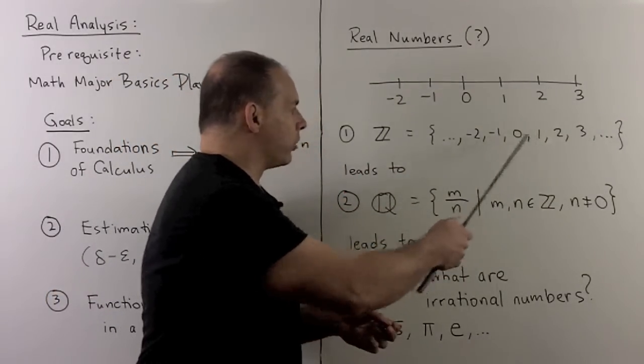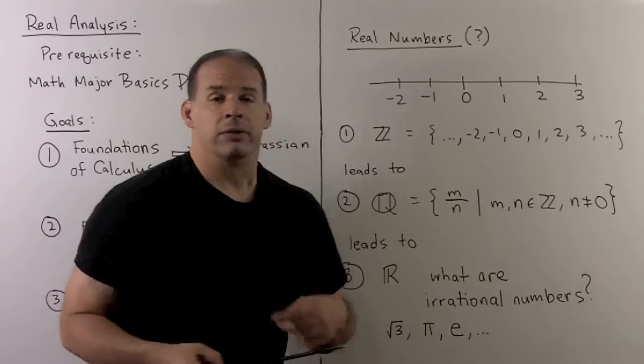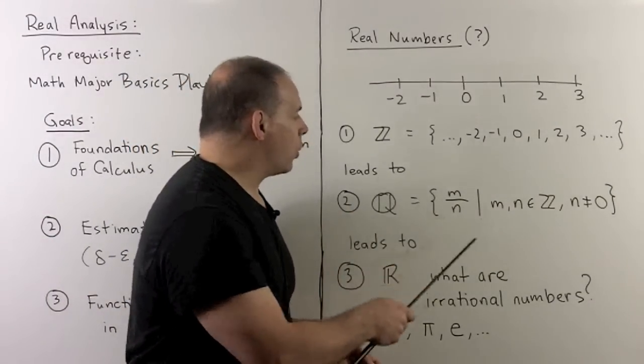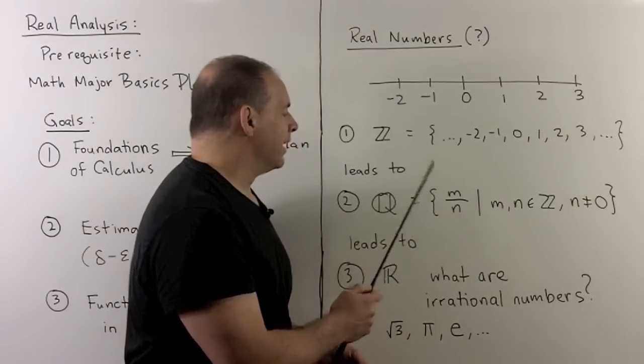Now, some things that show up in the real number line. We have the integers. Okay, so we have whole numbers, zero, and negatives. From the integers, we can form the rational numbers. So, here we take all quotients. We make sure we don't divide by zero.